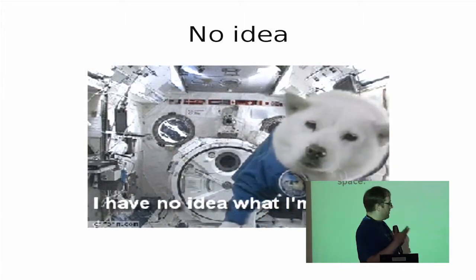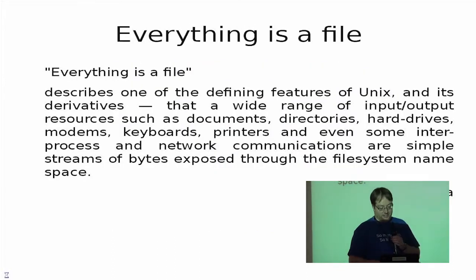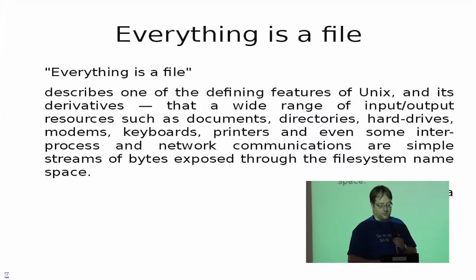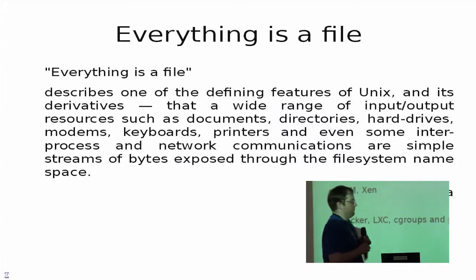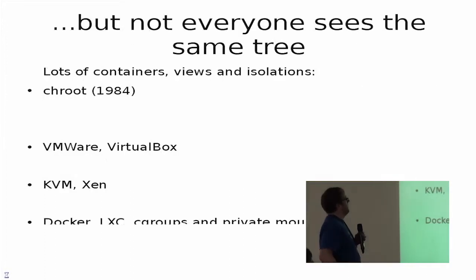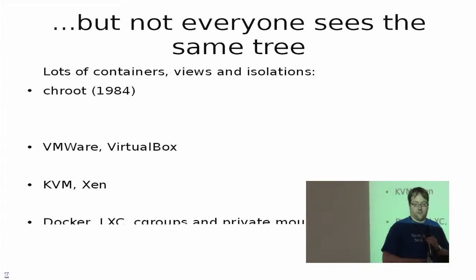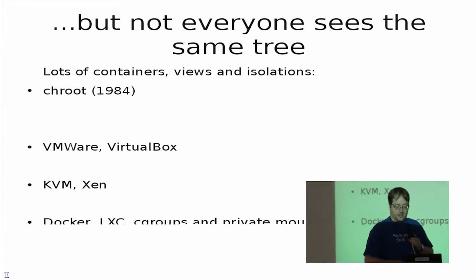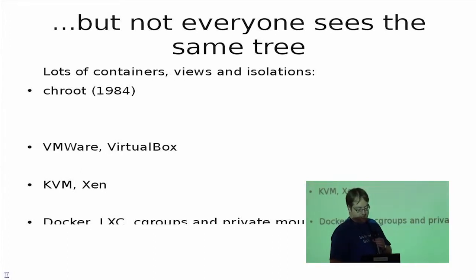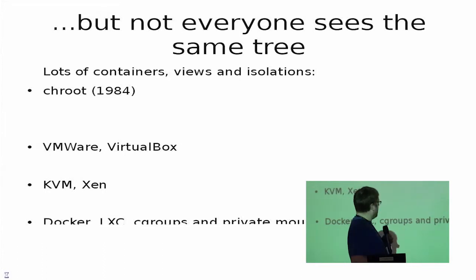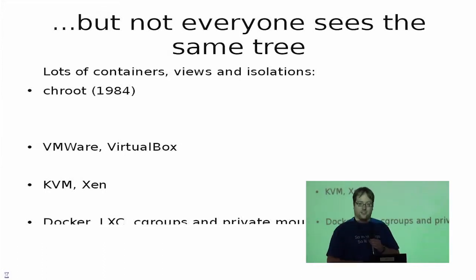The old way to do everything is: everything is a file. So when you install something, you put a lot of files on the system and then you have a new thing there. But it turned out that everything was changing rather quickly because not everyone is seeing the same filesystem tree — with things like Docker, you can actually have things that only some parts of your system see.